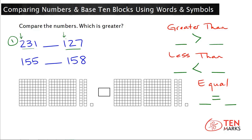I'm going to draw arrows over the hundreds place. When two numbers have the same number of hundreds, you'll have to compare other digits. But if one number has a greater number of hundreds, that number is greater. We have 231 and 127. 231 has two hundreds, and 127 has one hundred. Because the hundreds place is different in these numbers, you don't have to look at any other digits. 231 has more hundreds, so 231 is the greater number.